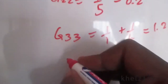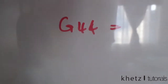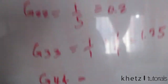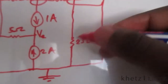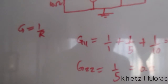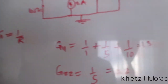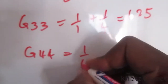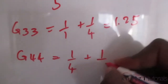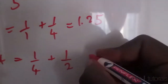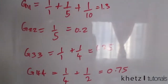Finally, since we only have four nodes, we compute G_44. At node 4 we have 1/4 plus 1/2, so 0.25 + 0.5 = 0.75.